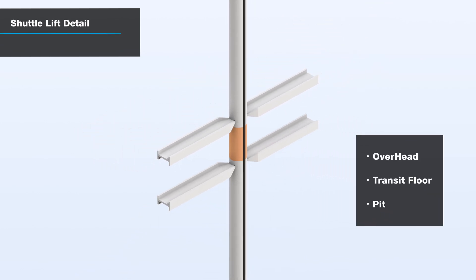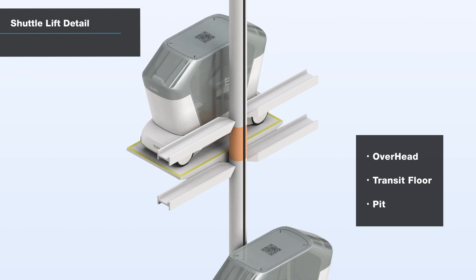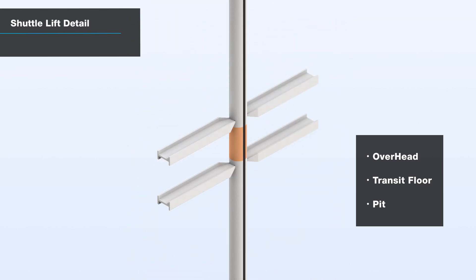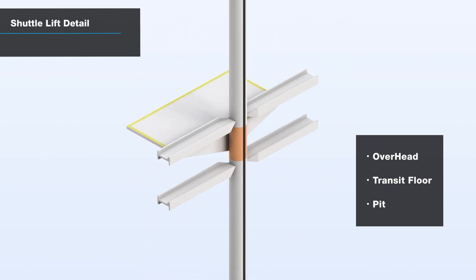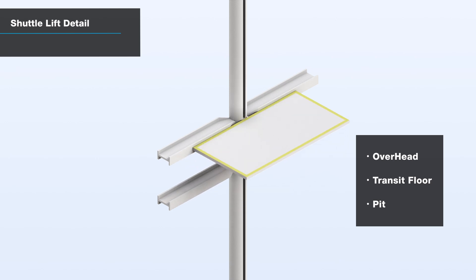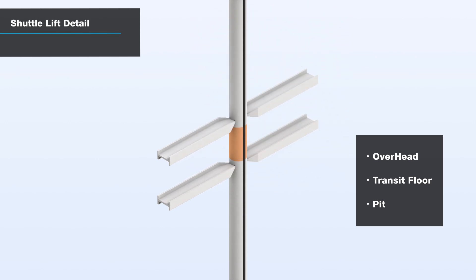The pallet rotates in the overhead or underground pit to allow it to switch to the ascending and descending routes. In the case of longer travel distances, it can also switch at the transit floor in the centre of the tower.